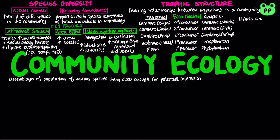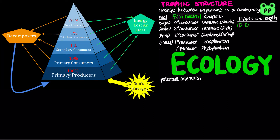Food chains are usually only a few levels long, which can be explained by two hypotheses. The energetic hypothesis suggests that chain length is limited by inefficient energy transfer, since only about 10% of the energy stored in the organic matter of each trophic level is converted to organic matter at the next trophic level. Other energy is involved in metabolism or wasted as heat.